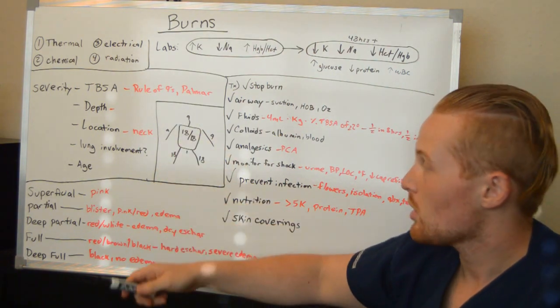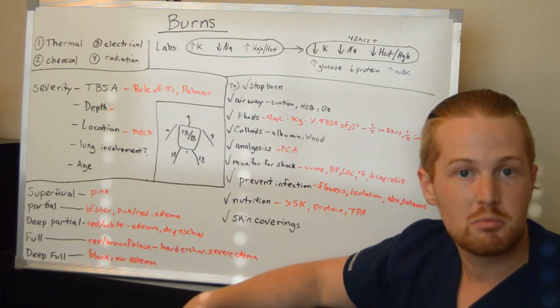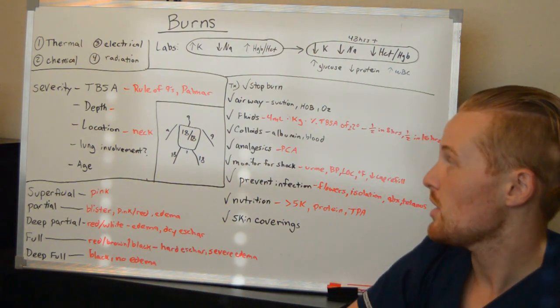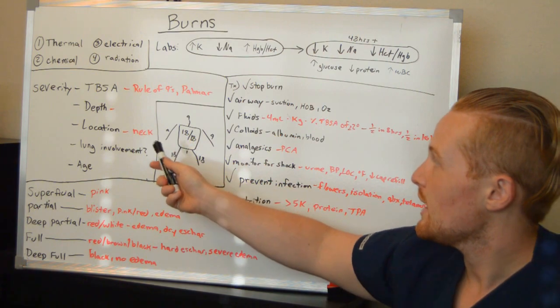And so this comes out being, of course, 100%. And so you can use the rule of nines. If the entire arm is burned, it's 9%. If half of the arm is burned, you can range it from 4% to 5%.